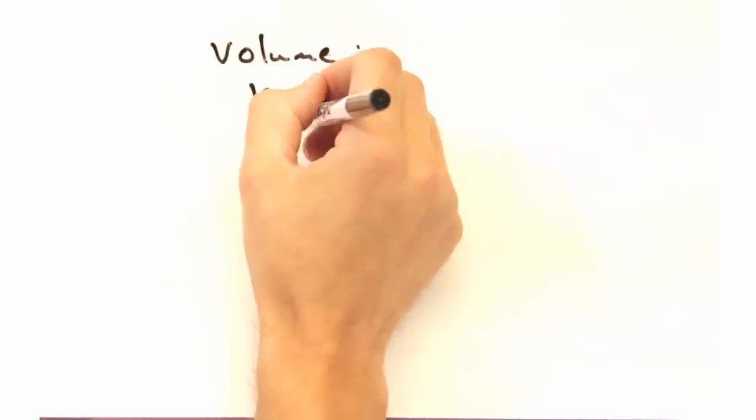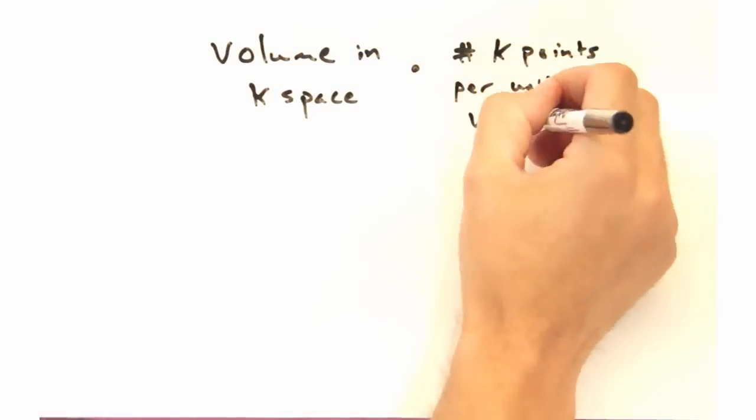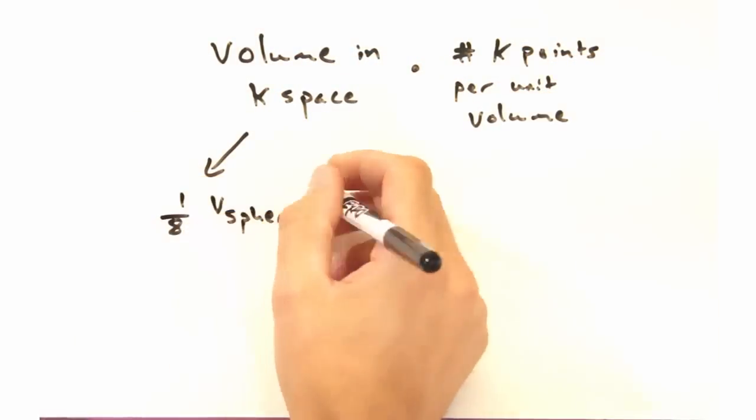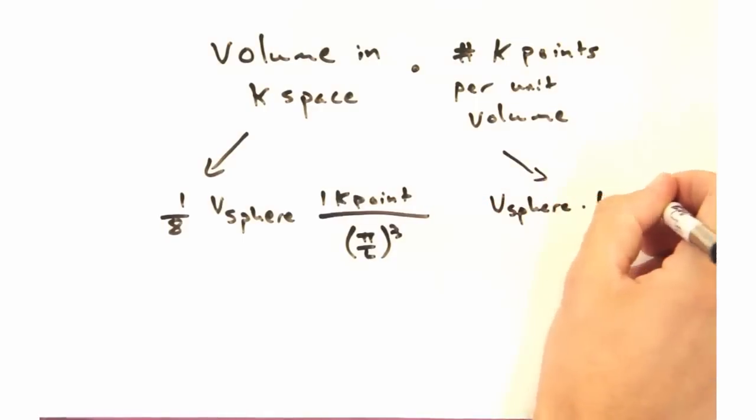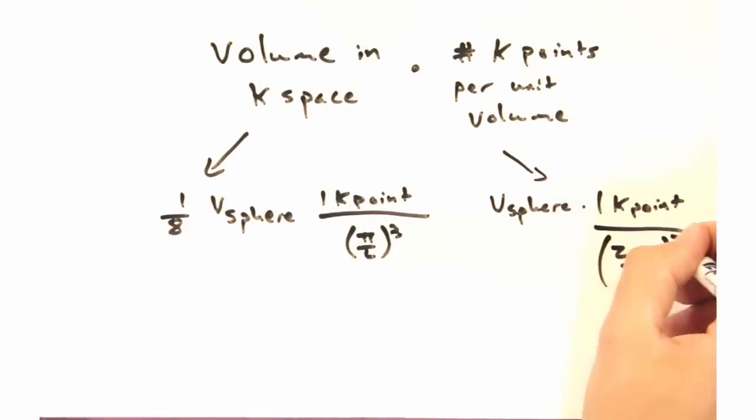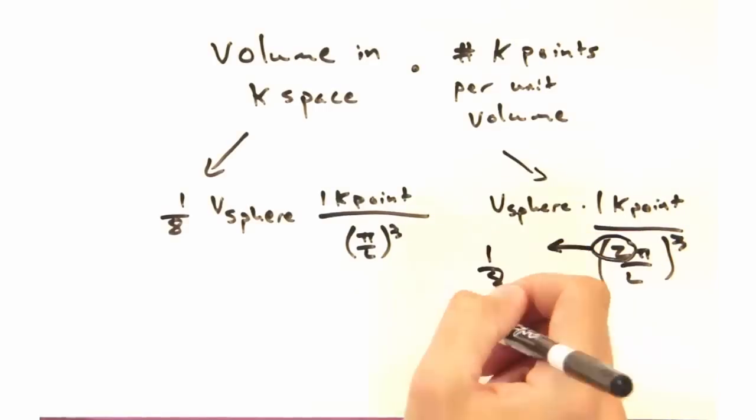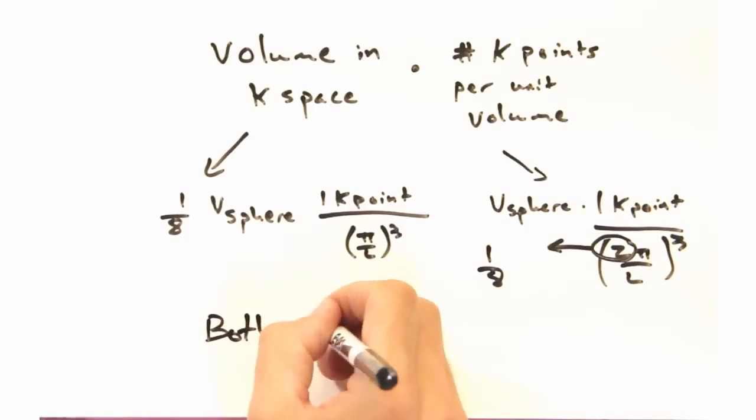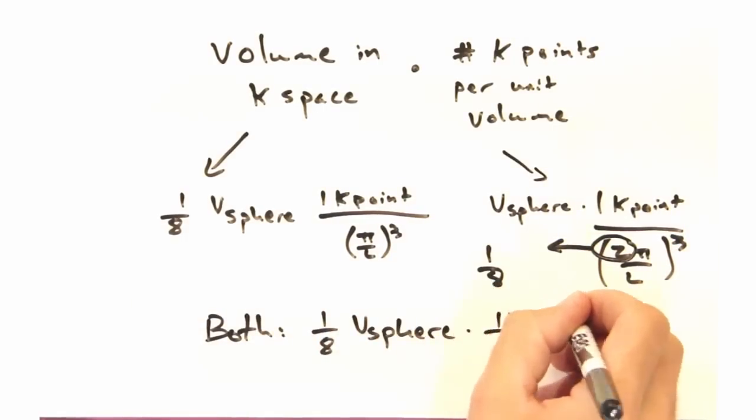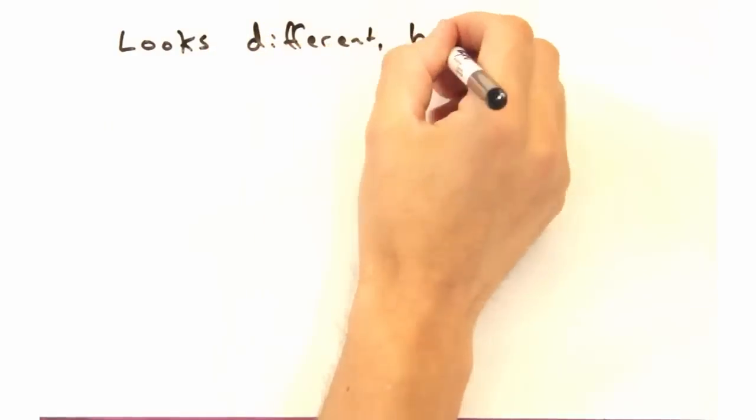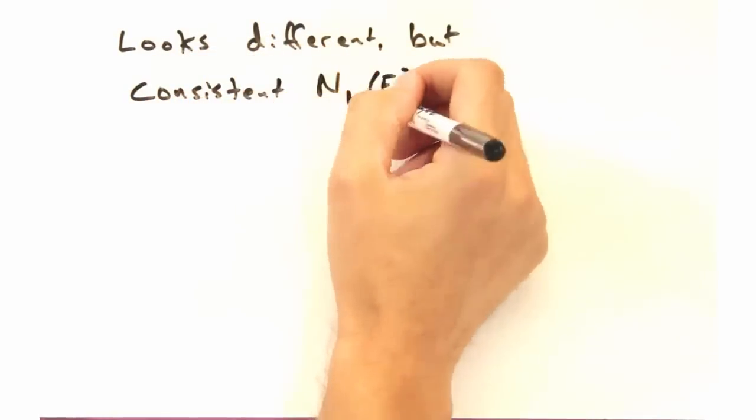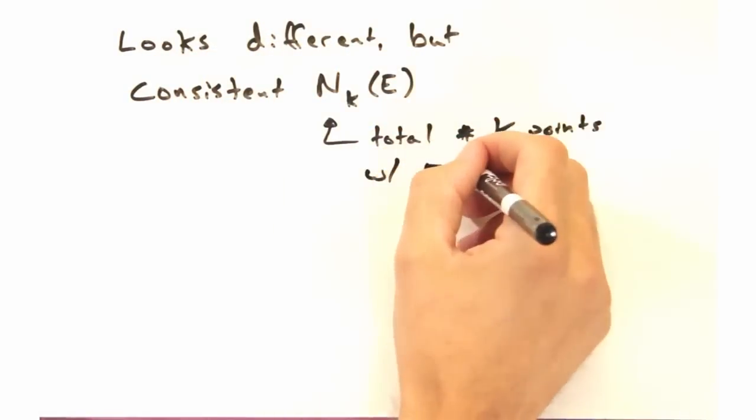The total points would just be the volume times the number of points per unit volume. For the fixed boundaries, we only have one eighth of the volume of the sphere, with the spacing of pi over l. But for the periodic case, even though we use the whole sphere volume, the spacing is twice as big, and so when you cube it, you get the same one eighth factor out front.